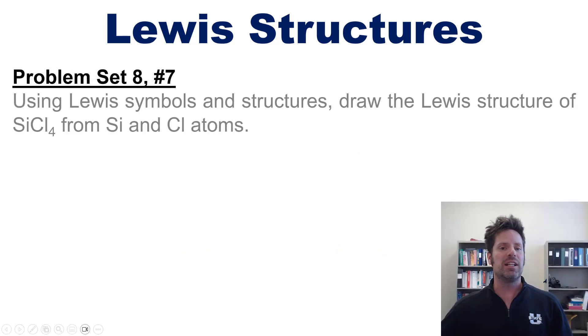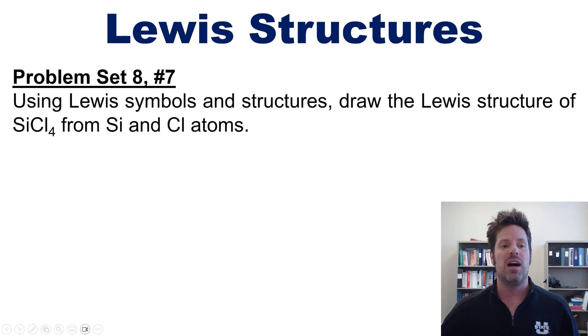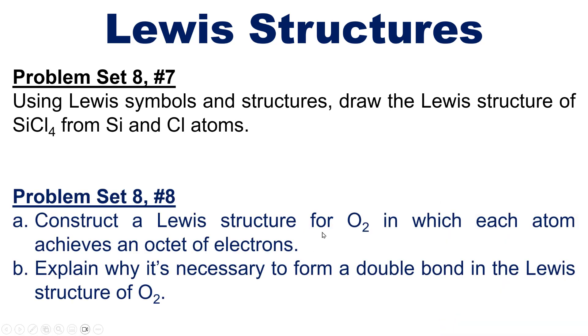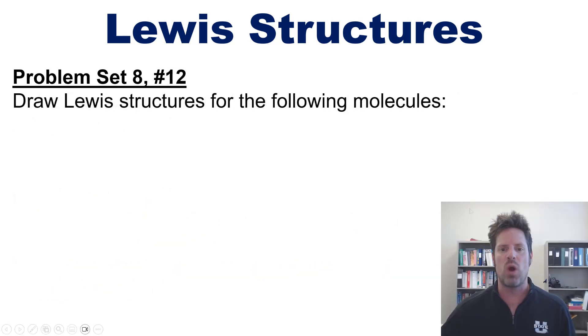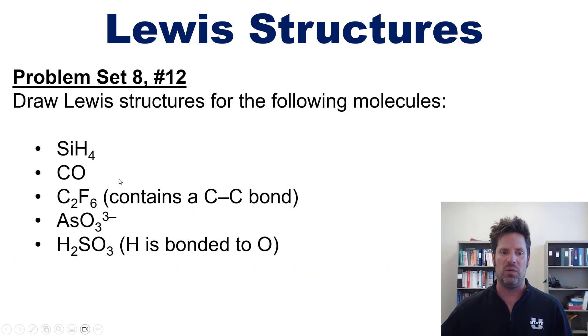using Lewis symbols and structures, draw the Lewis structure of silicon tetrachloride from silicon and chlorine atoms. And next, construct a Lewis structure of O2 in which each atom achieves an octet of electrons, and then explain why it's necessary to form a double bond in the Lewis structure of O2. And lastly, draw Lewis structures for the following molecules. Again,